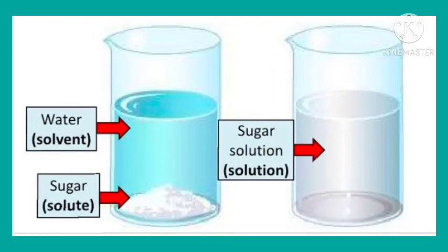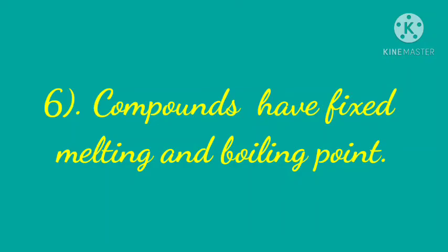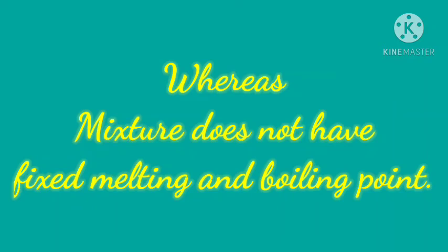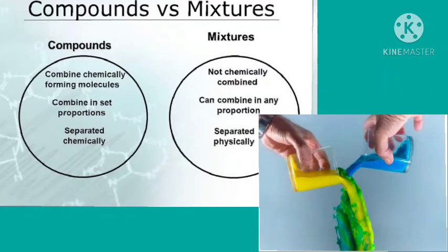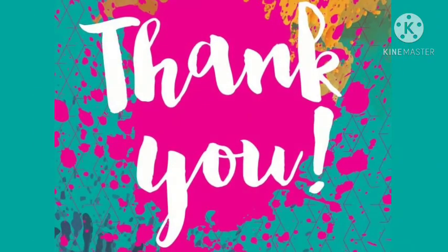Finally, a compound has fixed sharp melting and boiling points, whereas a mixture does not have sharp melting and boiling points. So children, this is all about the differences between mixtures and compounds. Thank you.